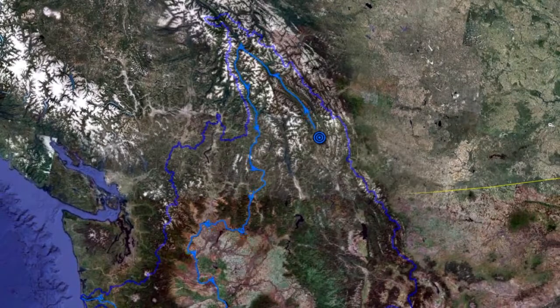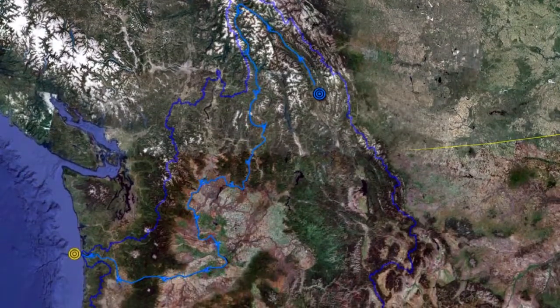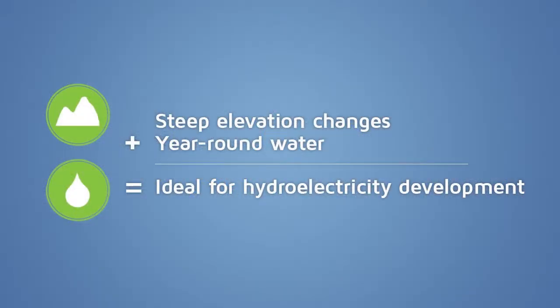The Columbia flows from Canal Flats, BC to the outflow into the Pacific Ocean in Astoria, Oregon. Elevation changes and a year-round supply of water make the Columbia River and its main Canadian tributary, the Kootenai River, ideal for hydro development.